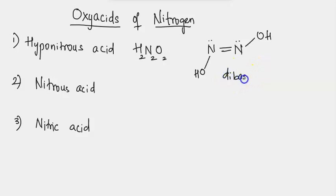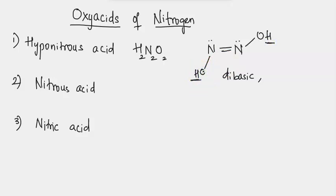It is a dibasic acid because it can donate two H+ ions — the two hydrogens connected to the two oxygens. This acid is said to be a less stable compound.